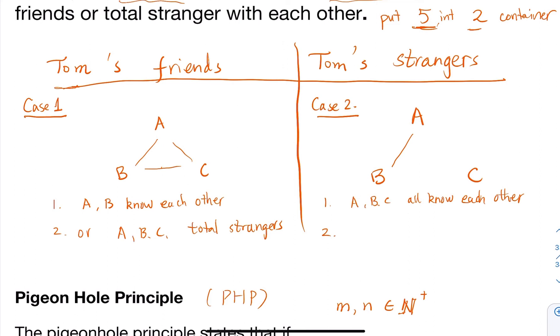If that pair is A and B, then A, B, and Tom are three strangers. If that pair is A and C, then A, C, and Tom are three strangers.